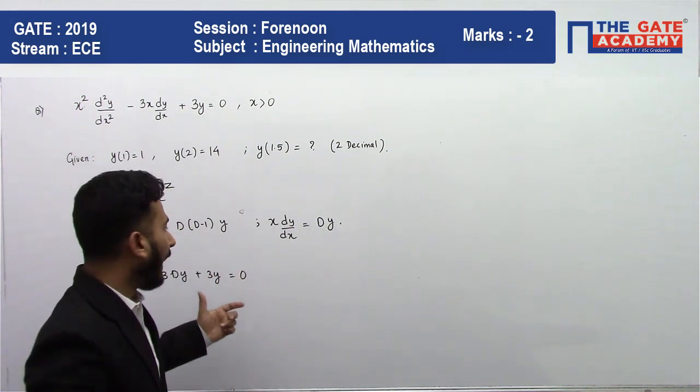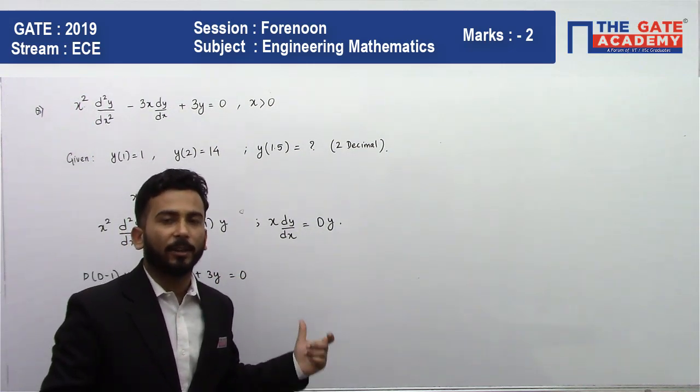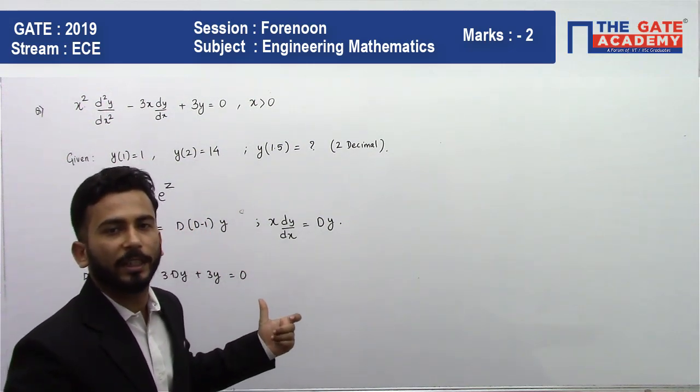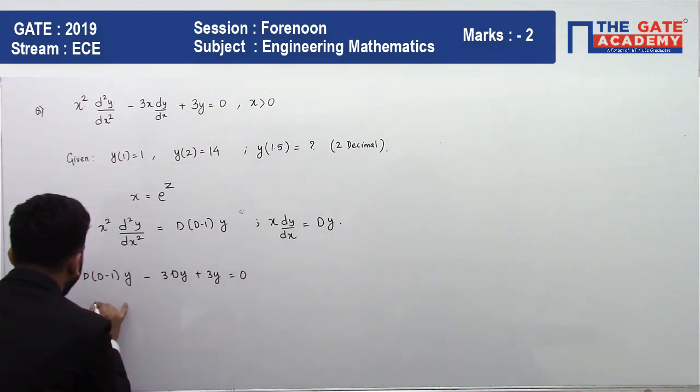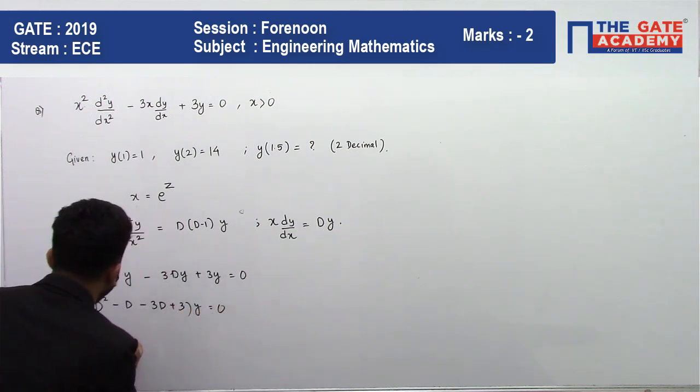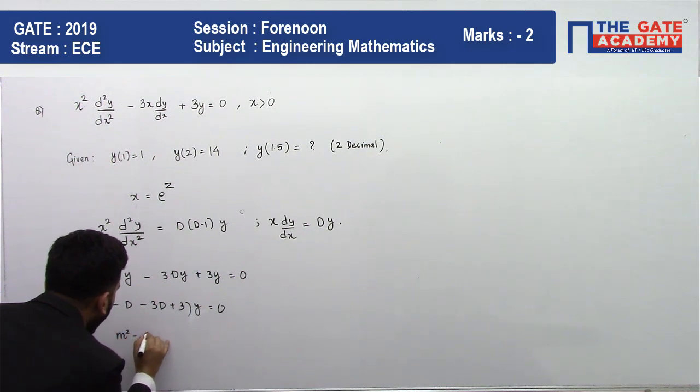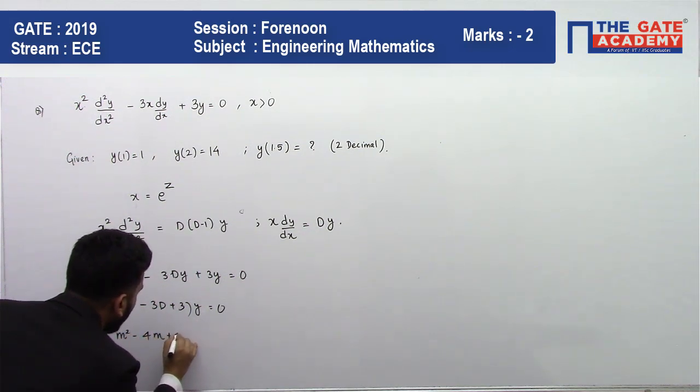I made the substitutions and will now simplify it to find the values. The auxiliary equation that I'm going to get is m² - 4m + 3 = 0.